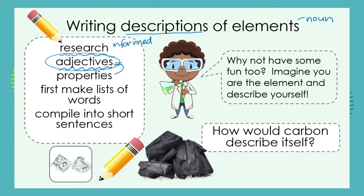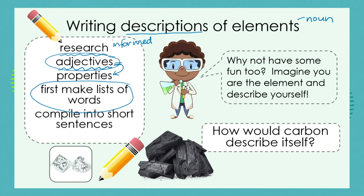These adjectives will also describe the properties of your element. Is it a solid or a gas at room temperature? What about its malleability and ductility — can we hammer it into sheets or draw it into long wires? Make a list of the words you want to use based on your research into the properties, then compile short sentences — one sentence to describe each property.